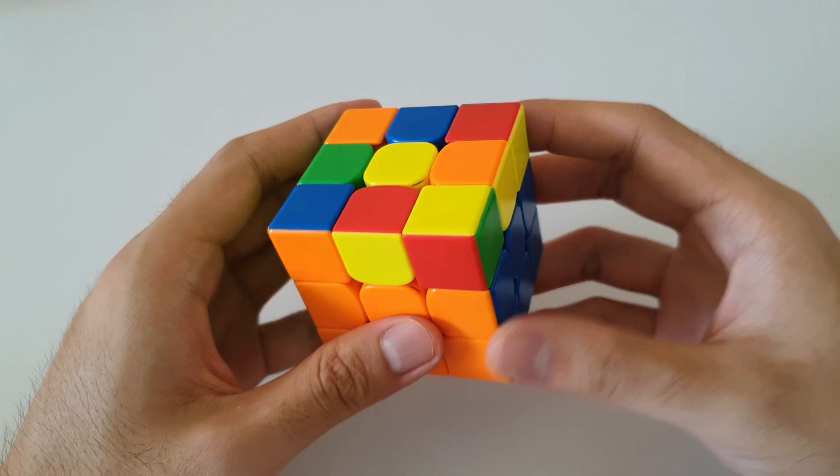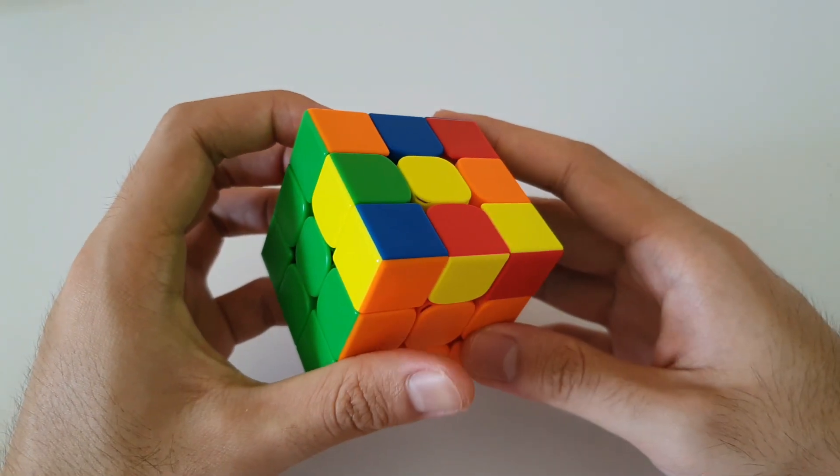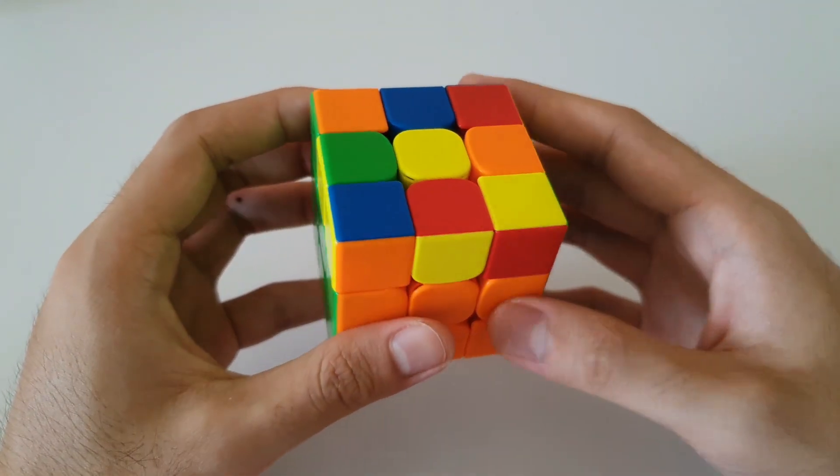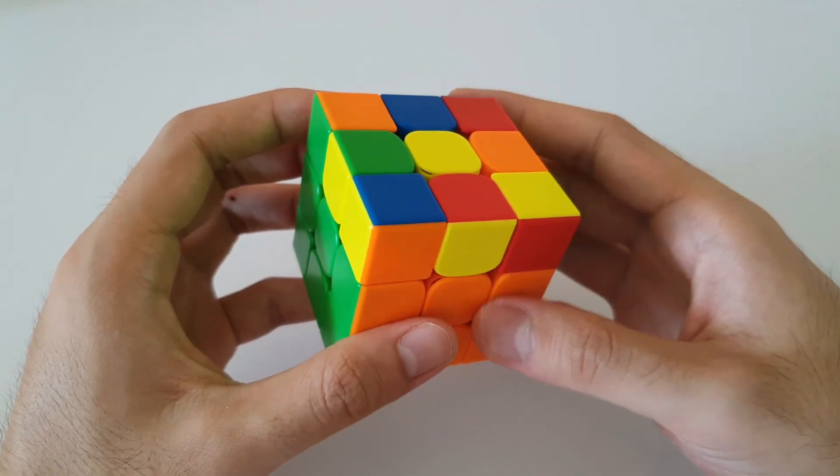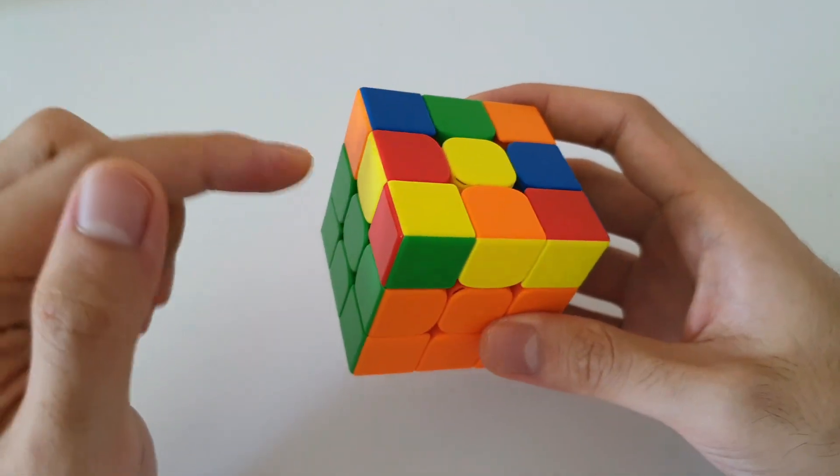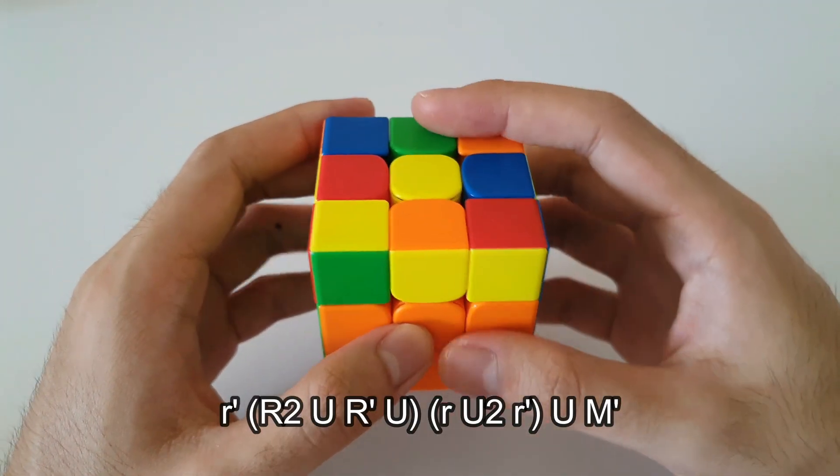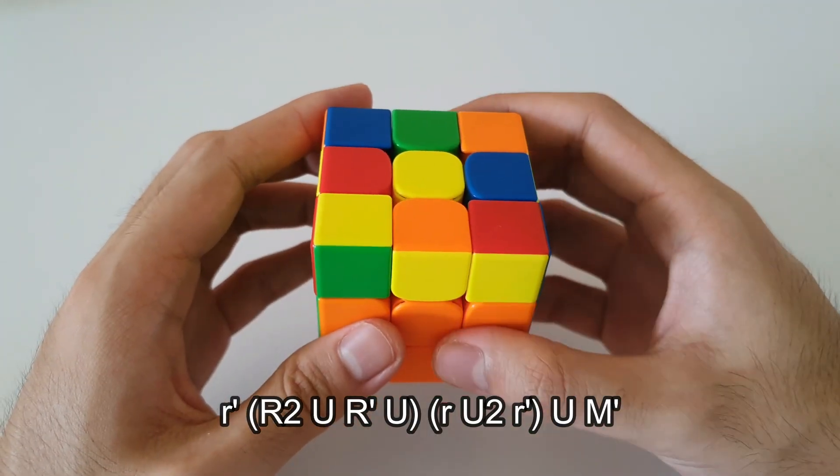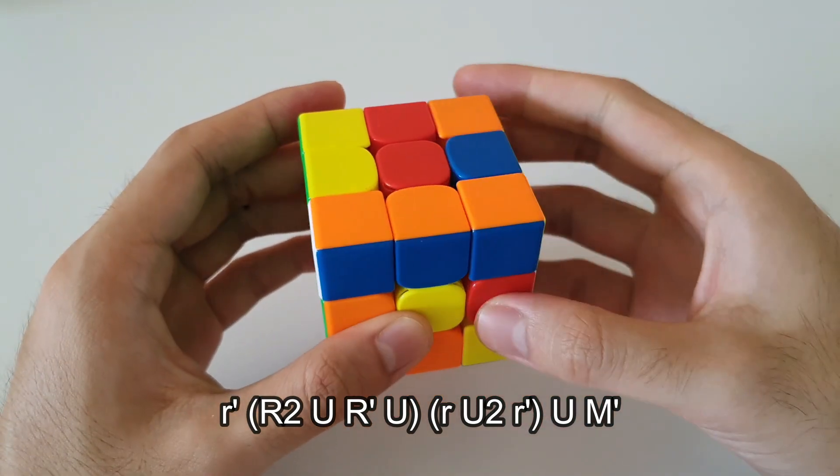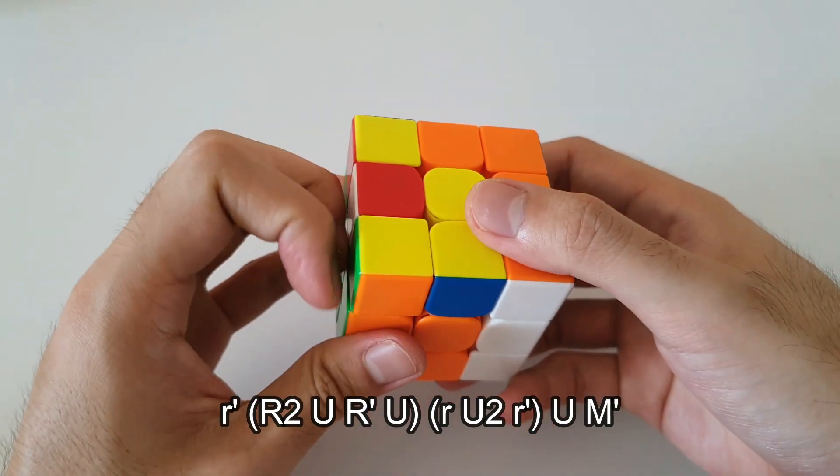So with the previous algorithm, it is quite easy to remember which is why I like to mention it, but the finger tricks are not very nice and we do have to re-grip halfway through the algorithm. So now I'll show a more advanced algorithm for the same case here, but with this algorithm the finger tricks are a lot nicer. For this algorithm we actually want to hold it so that the corner is on the front here and so that the single edge is facing the left side. From here we want to start off with an R', so wide R', that is followed by R2 U R' U. Following that it's wide R U2 wide R'.